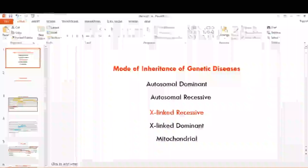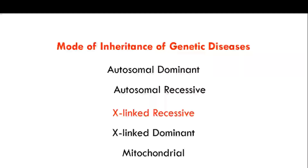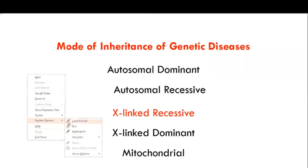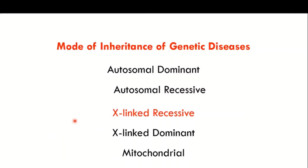Welcome back to this next video, which is another video in the series on X-linked recessive disorders. In the previous video, I told you that there are usually five types of modes of inheritance of genetic diseases: autosomal dominant, autosomal recessive, X-linked recessive, X-linked dominant, and mitochondrial. In this series, I am focusing on the X-linked recessive diseases.